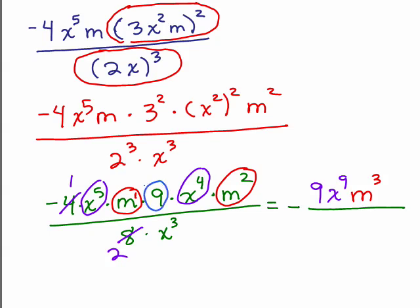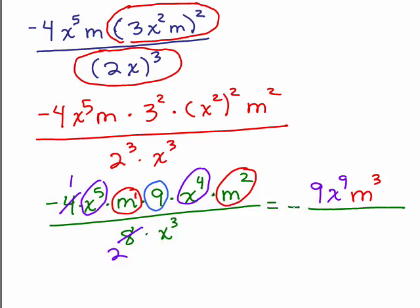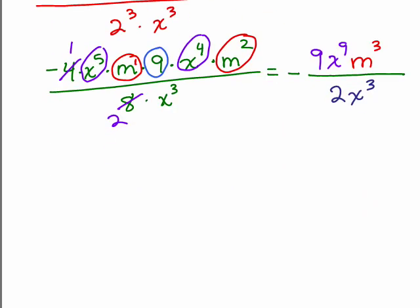I've pretty much taken care of everything in that numerator. What I have left on the denominator is a 2 and an x cubed. But are we done? We can't cancel with a 9 and 2. There's no m's in the numerator and denominator. But I do have an x to the 9th over x cubed. Here's where I'm going to use the quotient rule and subtract my exponents 9 minus 3. That's my final answer here.